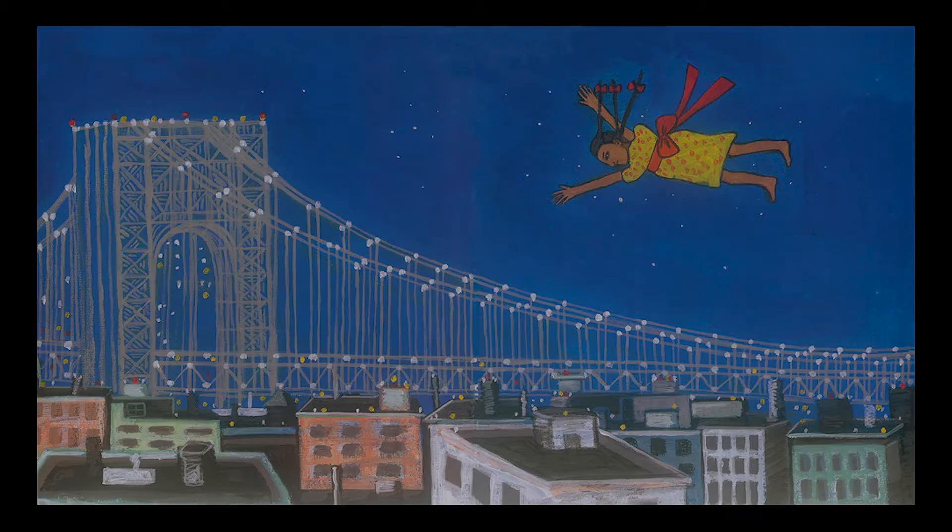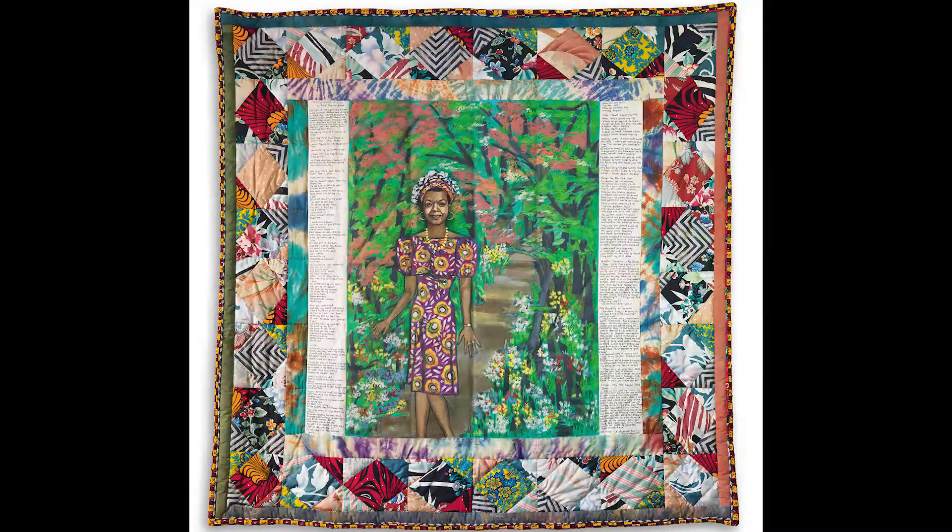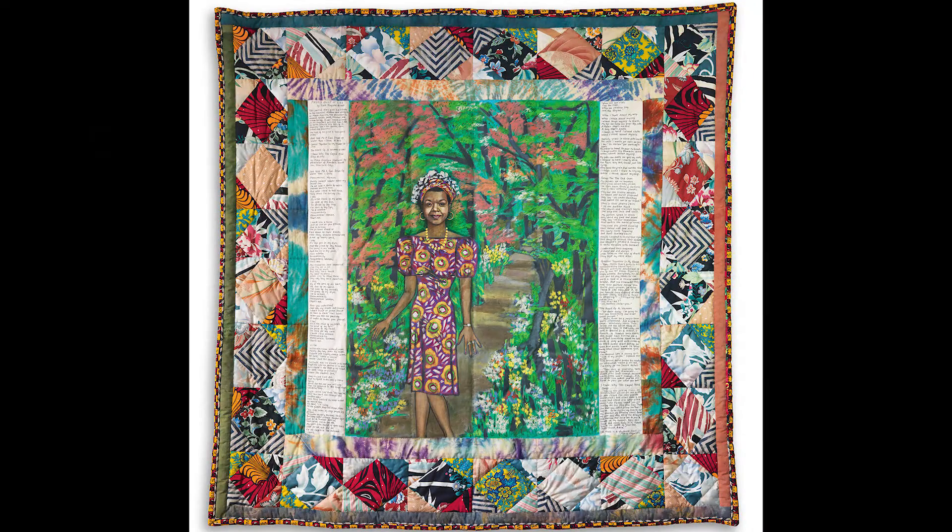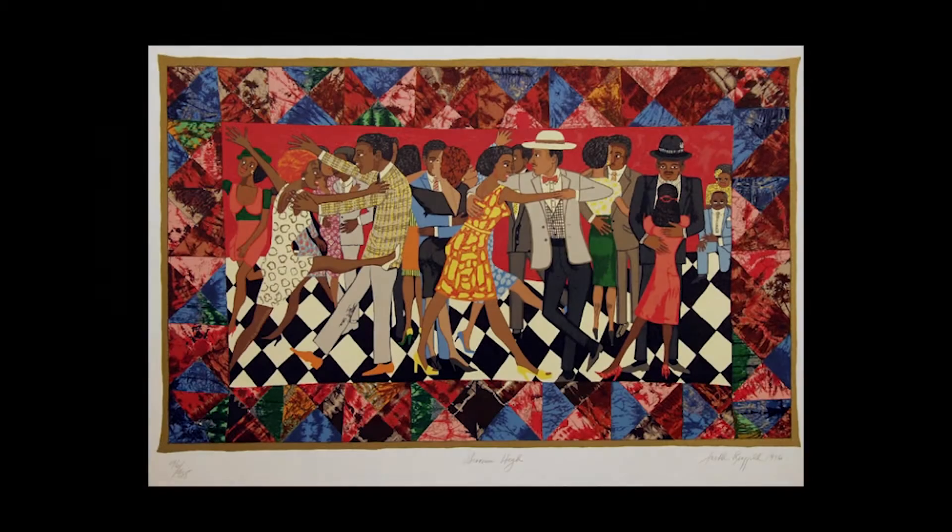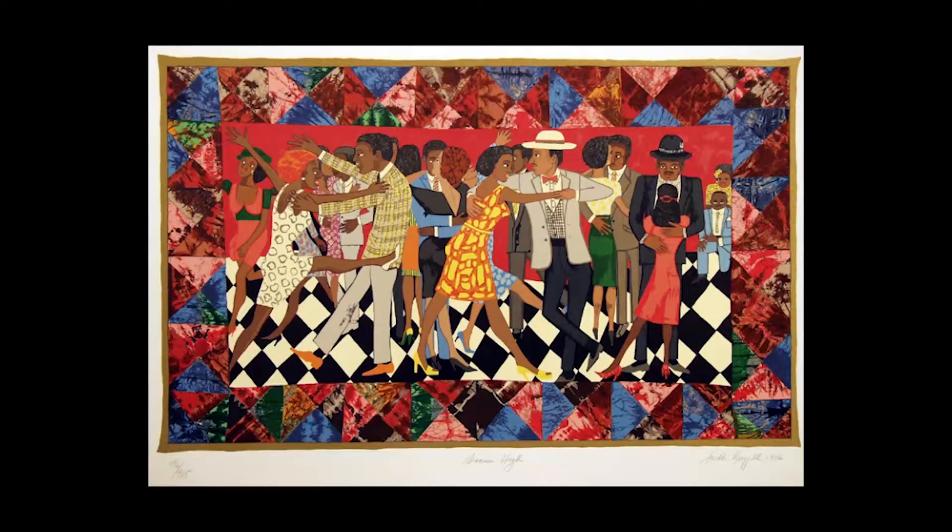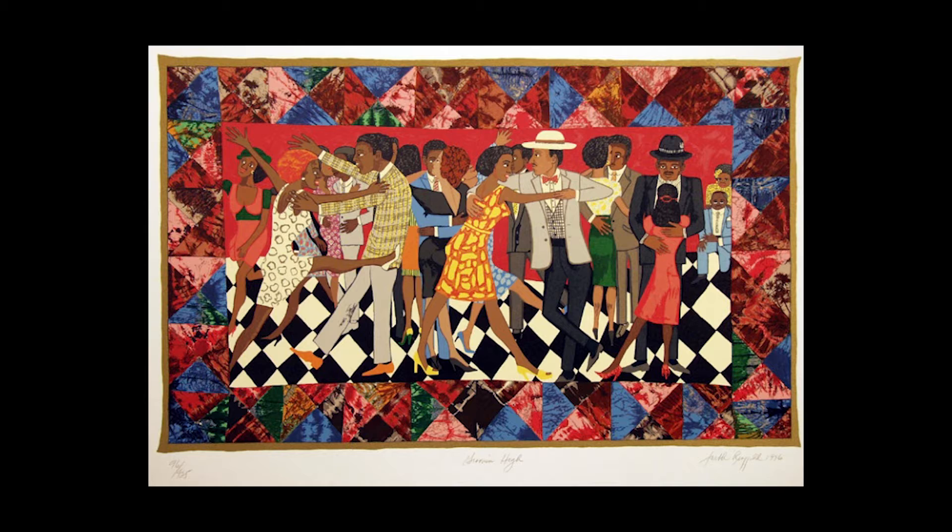Quilts are made by sewing different pieces of fabric together and usually you'll make patterns and designs with it. For story quilts you'll also see text and images sewn into the quilts as well. In Faith's work, the squares on the outside are usually just patterns and designs and most of what you see on the inside has the story and sometimes you'll see text on the border as well.